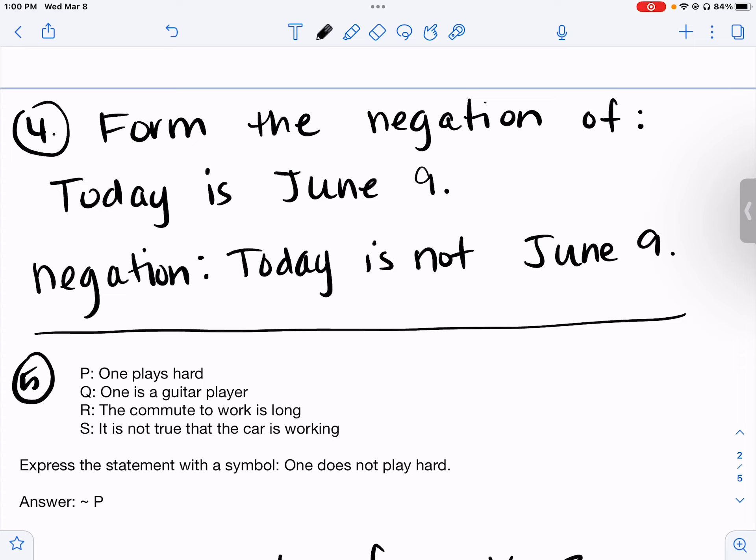Form the negation of "today is June 9th." The negation would be "today is not June 9th."